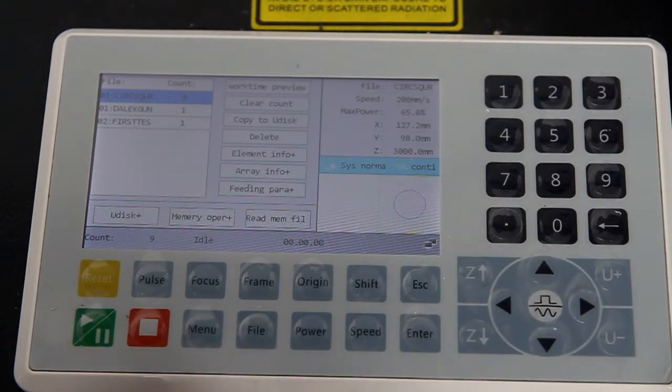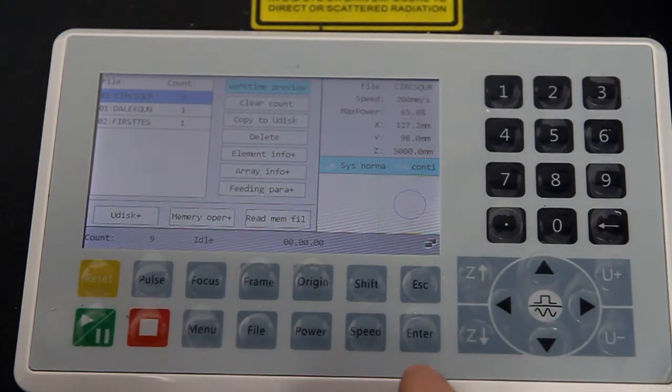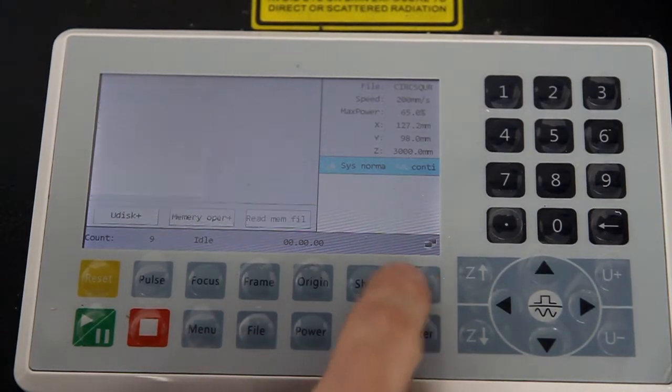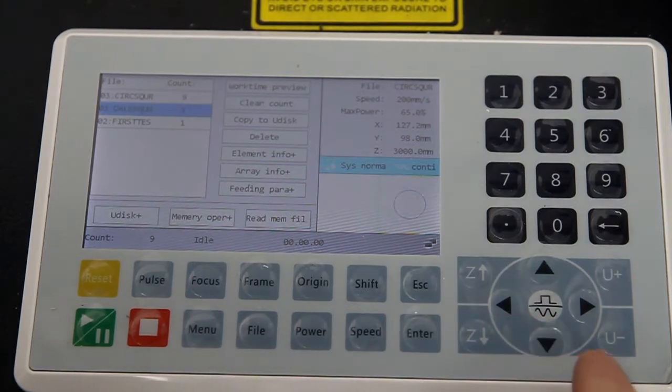Once you're over your file, you can either select it or press right and select work time preview and then press enter, and that will give you an estimated cut time which I found to be very accurate. To get out of there, press escape, go back to the file list, and then press enter on your file to actually load the job.